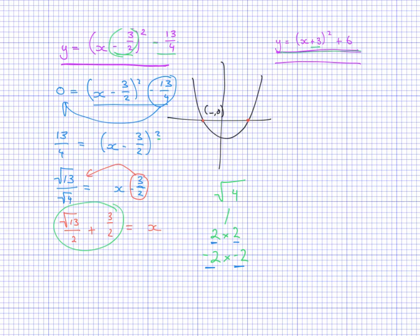Now this only works for, or this works best for square roots, so it's something you need to remember that at this step here, going into that step there, out the front there should be a plus minus to indicate that there is a positive solution and a negative solution. So at the front of this root 13 on 2, there should be a plus minus.